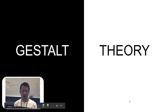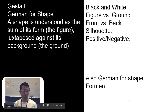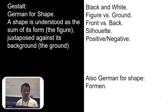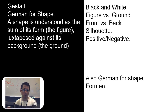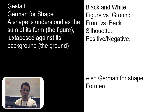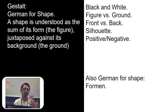What is Gestalt? It's kind of a complex subject. Gestalt, if you look it up in the dictionary, it's just the German word for shape, and it comes from a couple of German design movements. A shape in this case is understood as the sum of its form juxtaposed against the background — the figure-ground relationship.